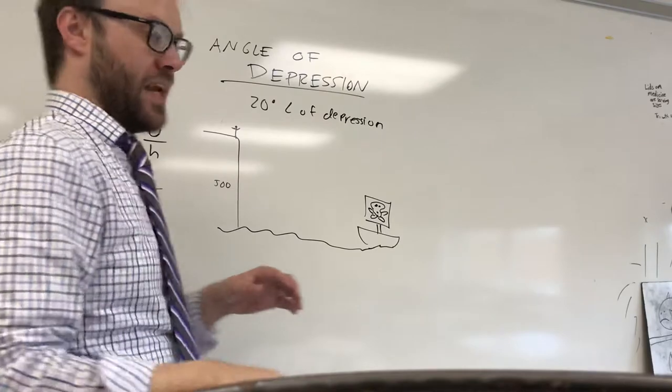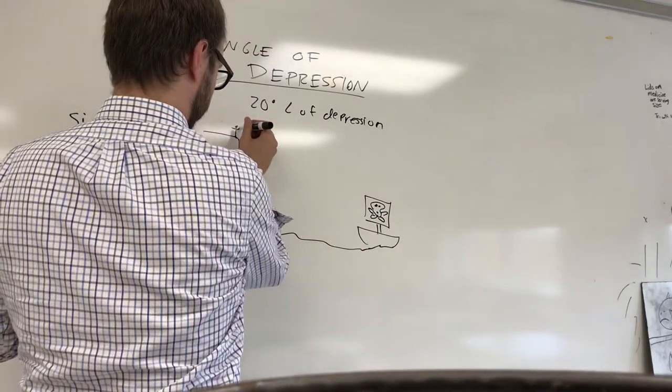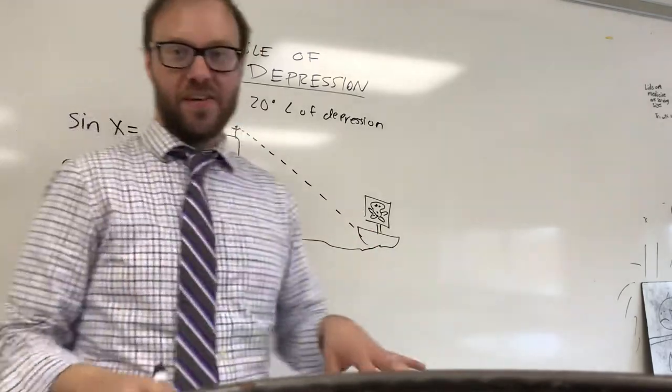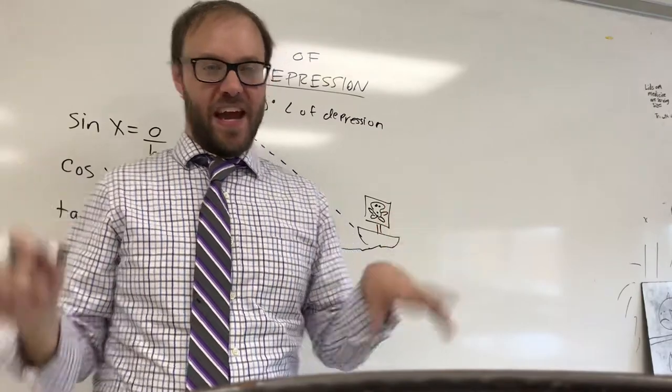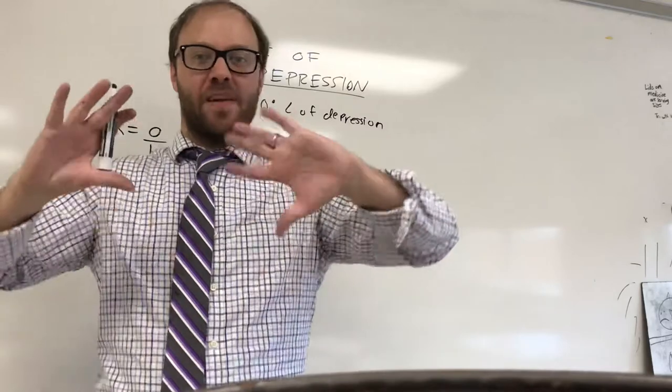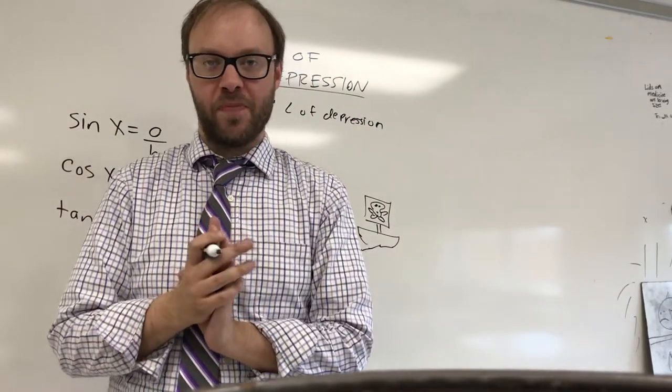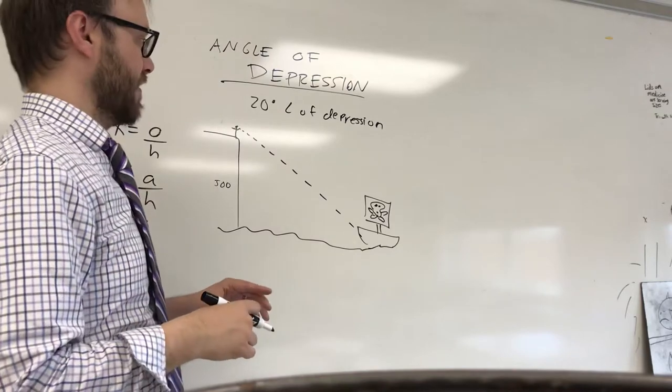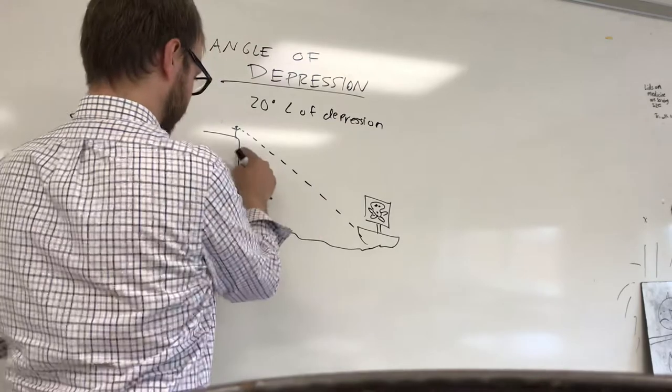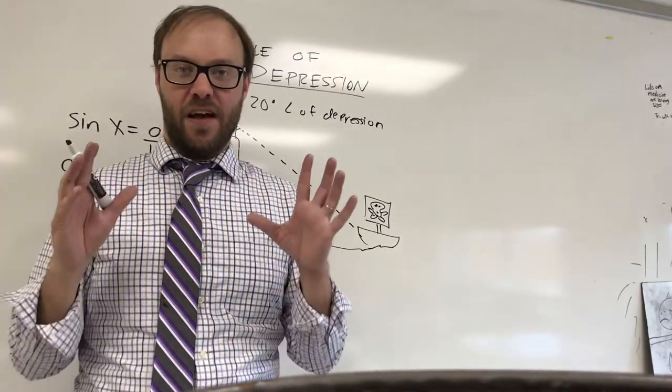Here's what the angle of depression means. You are looking down at the pirate ship, and we're assuming your head level is 500 feet above the ground. I'm not going to factor the person's height in here. We're just going to say the measurement is 500 feet above water level, and there's a 20 degree angle of depression. Now here's the mistake that people make. People say oh, it's the angle down to the pirate ship, that's 20 degrees. That is not the angle of depression.